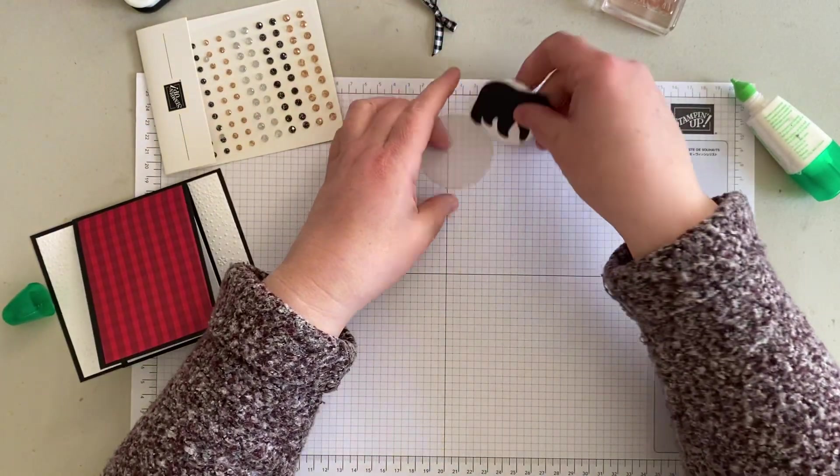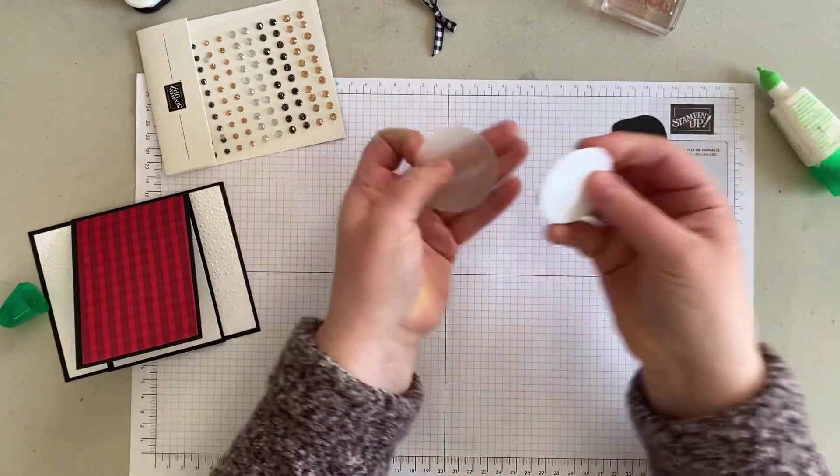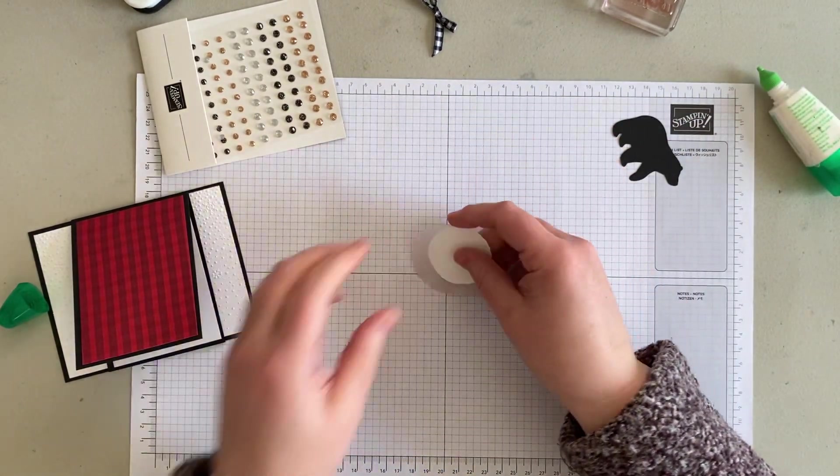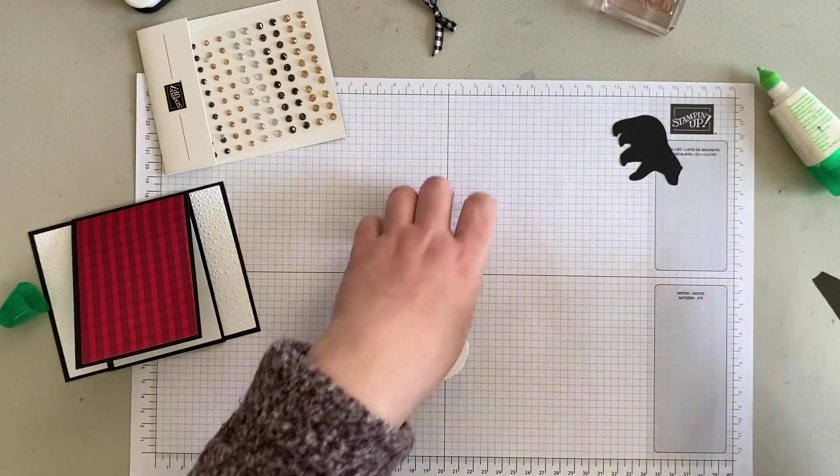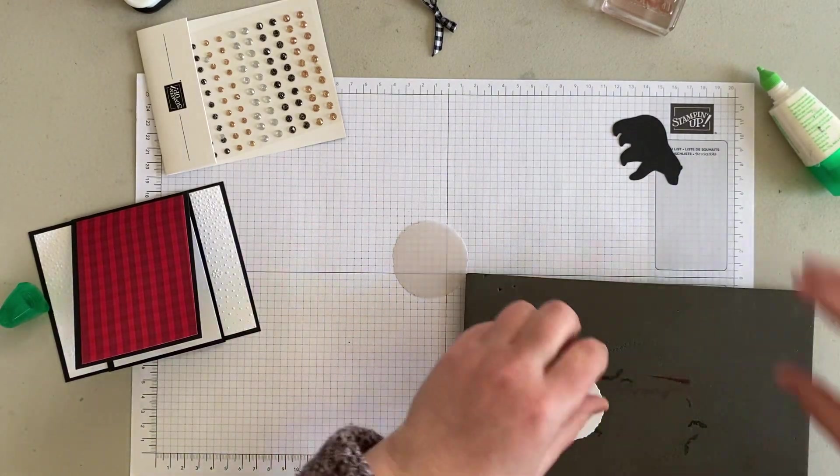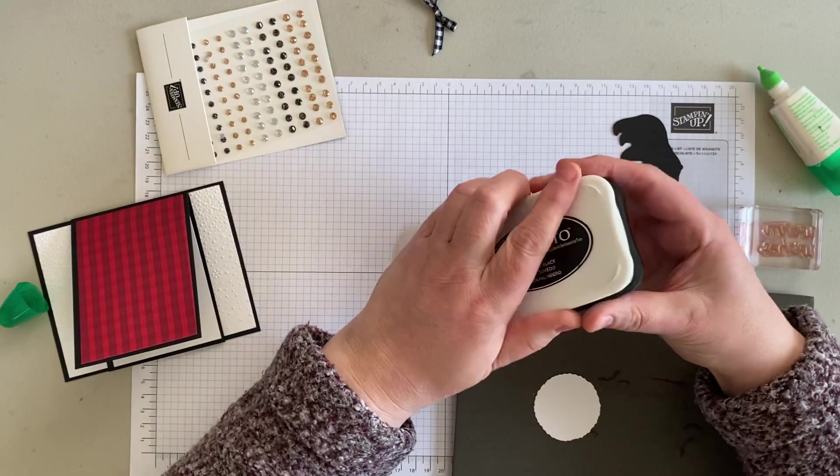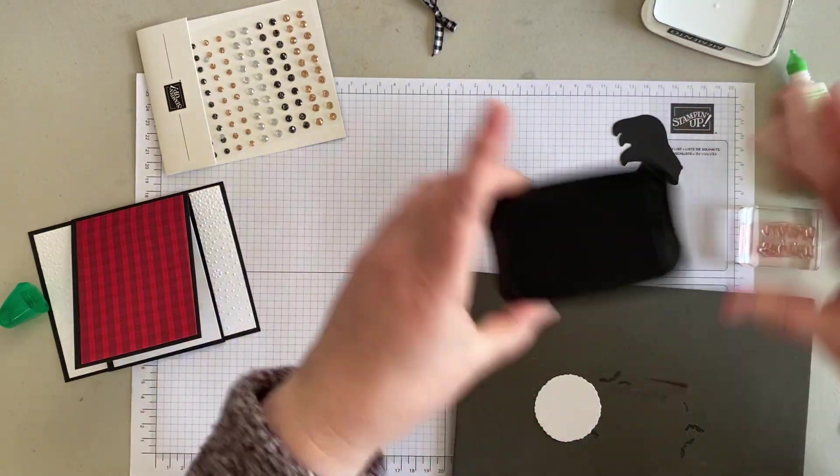I've got two circles that I've cut out using the deckled circles. I'm going to stamp on the white one, Warm Wishes in Memento Black.